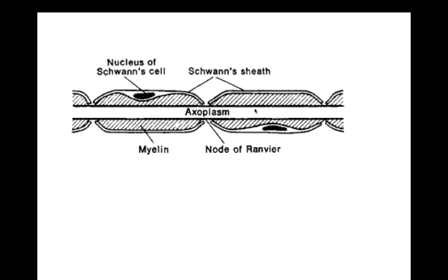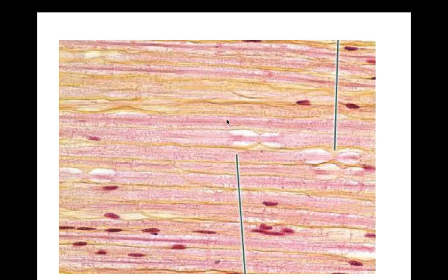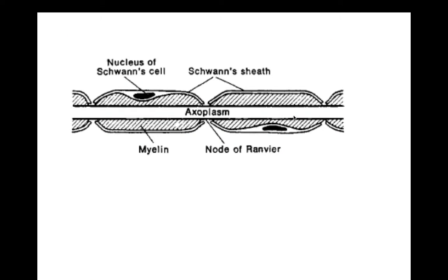Now we're going to be looking at some nerves — specifically a longitudinal section of a nerve. If I say the word 'nerve,' you automatically know you are in the PNS. A nerve is a collection of axons or nerve fibers in the PNS. Remember, a nerve is only in the PNS — your 31 pairs of spinal nerves, your cranial nerves, your sciatic nerve — all in the PNS.